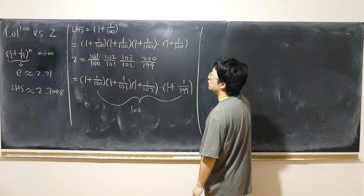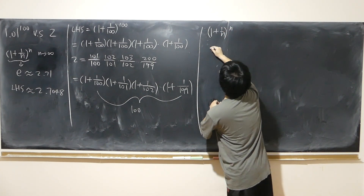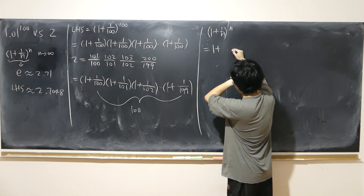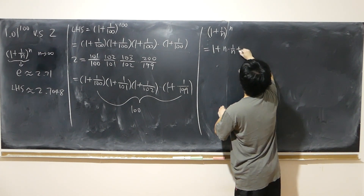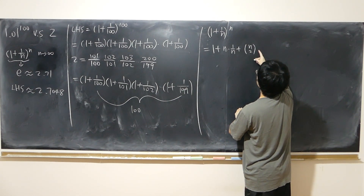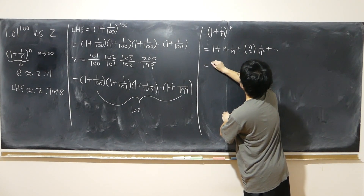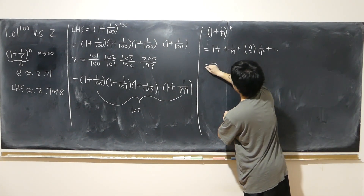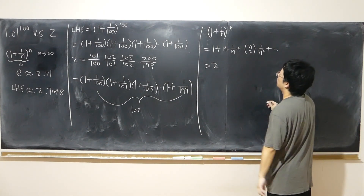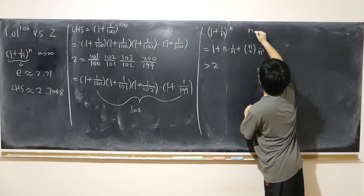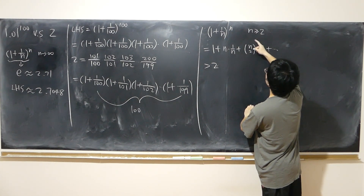If you're familiar with binomial expansion, interestingly, (1 + 1/n)^n expands to 1 + 1 + (n choose 1)·(1/n) + (n choose 2)·(1/n²) + ... which already equals 2 from the first two terms, and everything remaining is positive. So it's definitely strictly bigger than 2, as long as n is greater than or equal to 2.